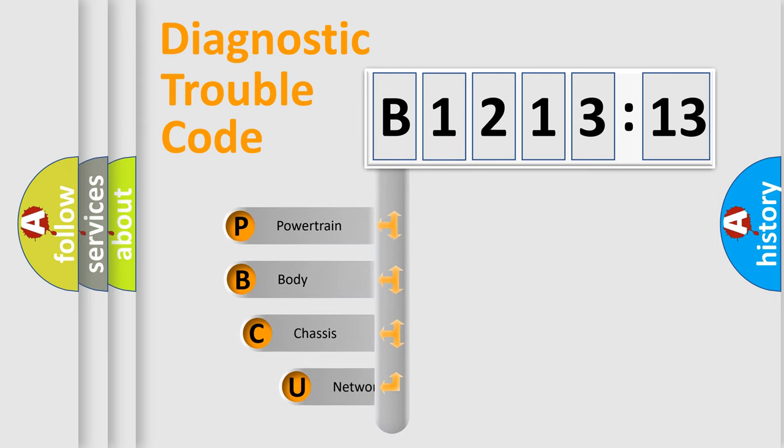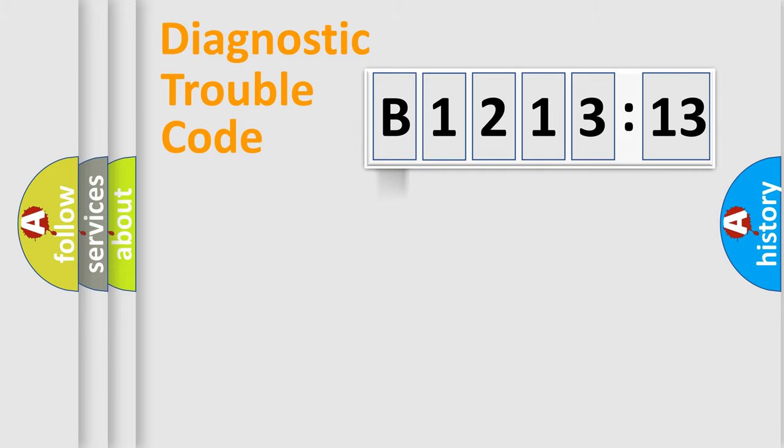First, let's look at the history of diagnostic fault code composition according to the OBD2 protocol, which is unified for all automakers since 2000. We divide the electric system of automobile into four basic units.